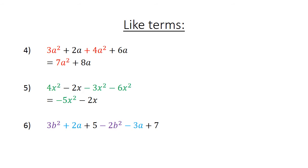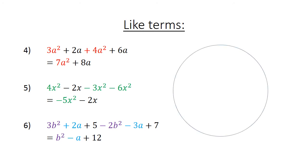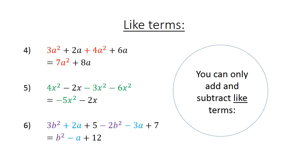Then we have 3b squared plus 2a plus 5 minus 2b squared minus 3a plus 7. If you look at the colors, the colors indicate the like terms. This equals b squared minus a plus 12. Remember, only add and subtract like terms.